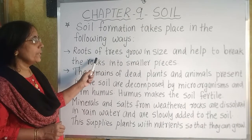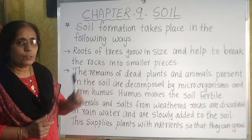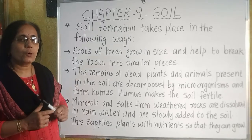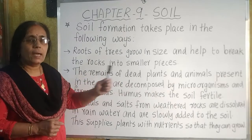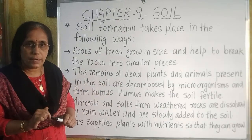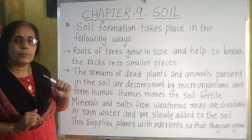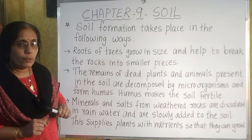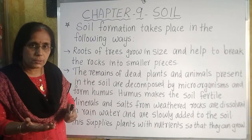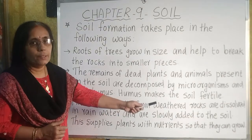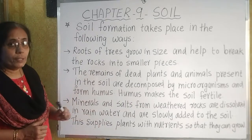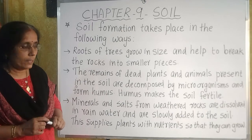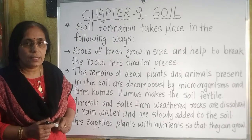The roots of trees grow in size and help to break the rocks into smaller pieces. The remains of dead plants and animals present in the soil are decomposed by microorganisms to form humus, which makes the soil fertile. Additionally, the minerals and salts from the weathered rocks dissolve in rain water and are slowly added to the soil, making it very fertile and supplying plants with nutrients so that they can grow well.